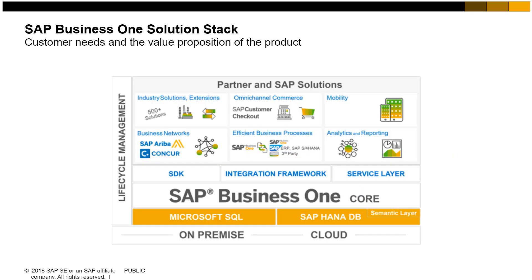The graphic displays SAP Business One's solution stack, which rests on a solid foundation with its deployment flexibility. SAP Business One can be run on-premise or in the cloud. Customers choose from SAP's hosted cloud environment, a partner hosted cloud, or a private cloud. SAP Business One runs completely on in-memory technology when you use the SAP HANA database as the underlying platform. However, you also have the option to run on Microsoft SQL — either way, you have flexible deployment options.